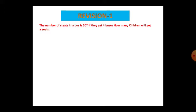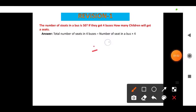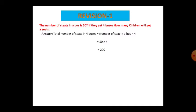Taking the 'A Trip to Bhopal' chapter, here is the first problem. The number of seats in a bus is 50. If they get 4 buses, how many children will get a seat? Total number of seats in 4 buses: 50 multiplied by 4. Five 4s are 20, so it is 200. Hence 200 children will get seats if they get 4 buses.